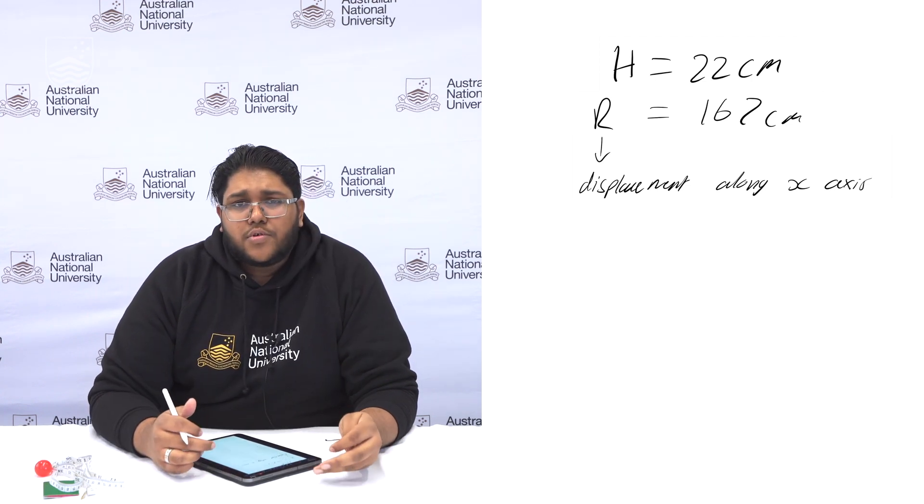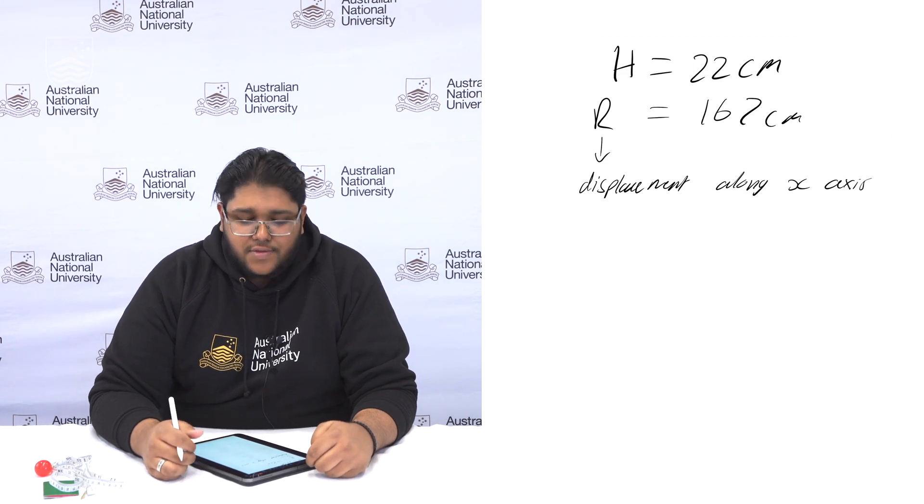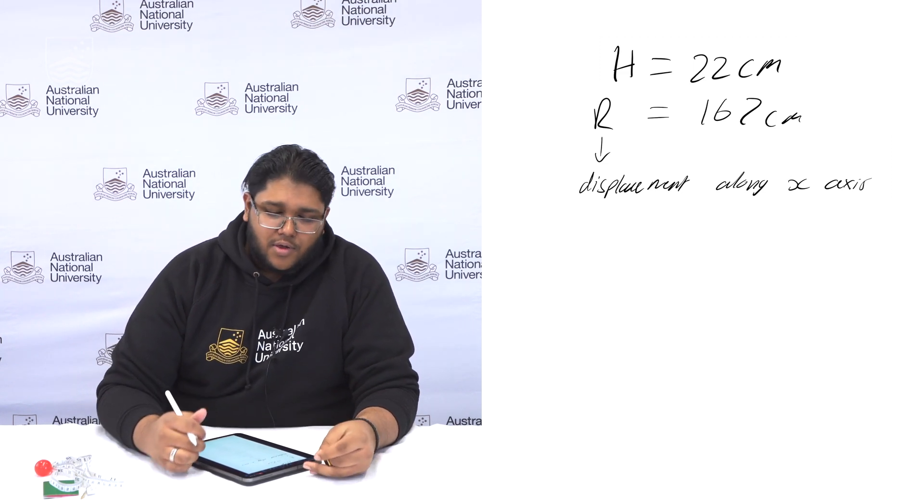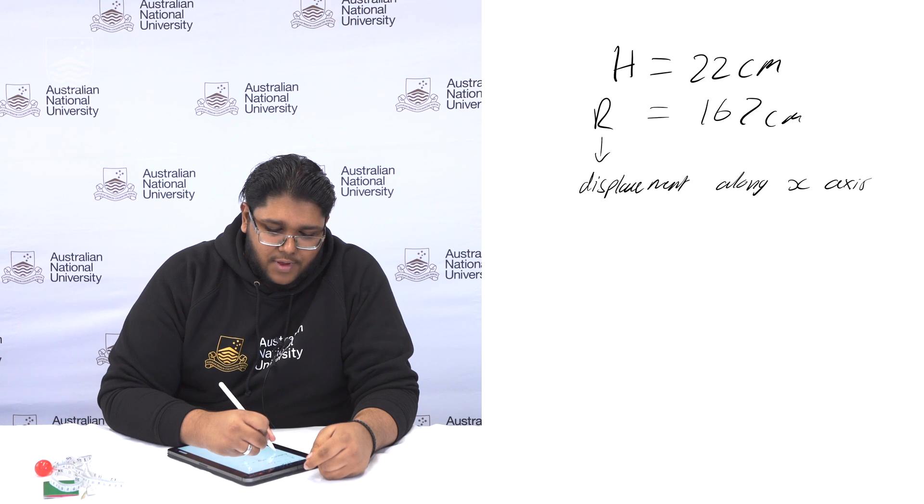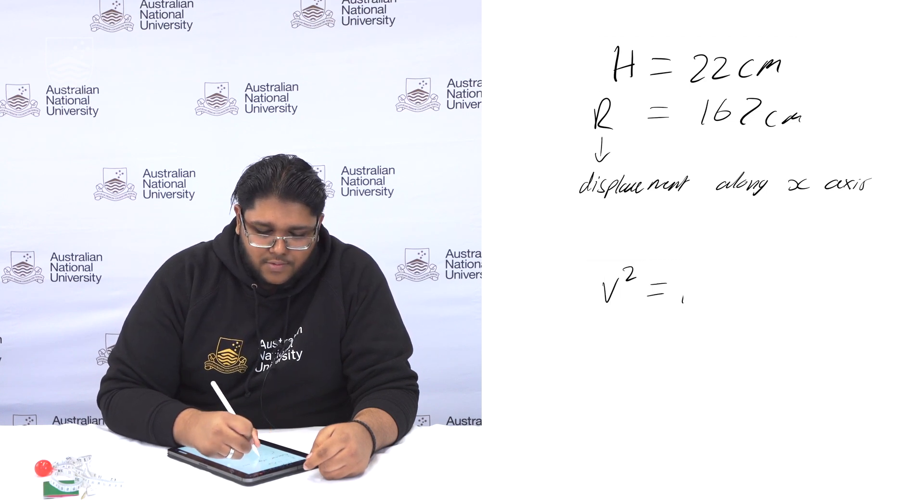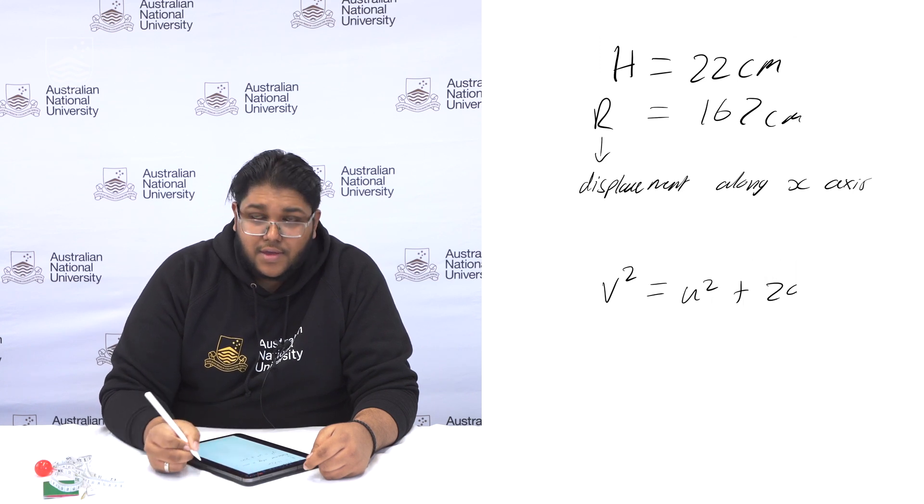So what we're going to be calculating first is the angle of release. To do that we take this formula v squared equals u squared plus 2as.